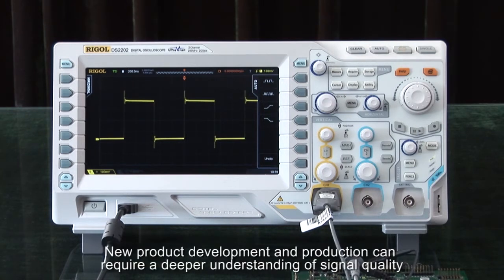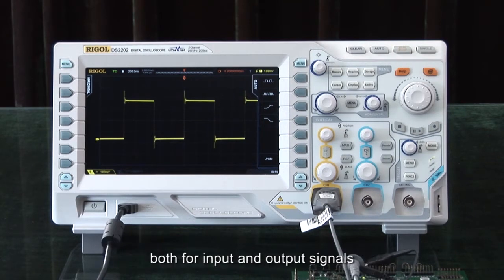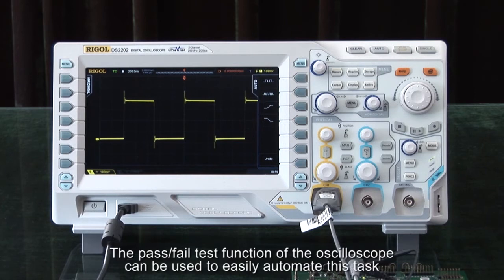New product development and production can require a deeper understanding of signal quality, both for input and output signals. The pass-fail test function of the oscilloscope can be used to easily automate this task.